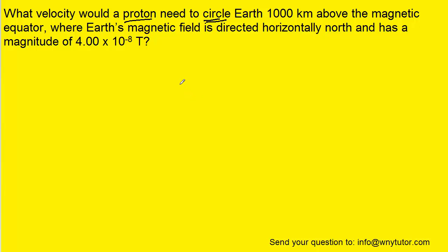We know that objects that travel in circular paths must have a centripetal force acting on them. Now, from a previous unit, we learned that a centripetal force is equal to the mass of the object times its speed squared divided by the radius.